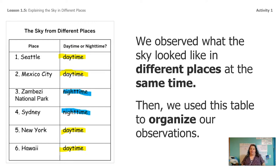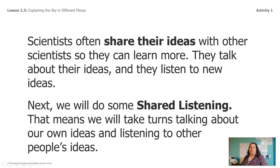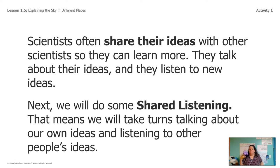We're going to put all our evidence together and explain to Sai why the sky looked different. Let's start with the chart we ended with yesterday. We observed what the sky looked like in six different places, and then we organized our observations by coloring daytime ones yellow and nighttime ones blue. Scientists share their ideas and talk to each other — that's why having a partner is so important today. Even without classmates, it's important that we talk and listen to each other.